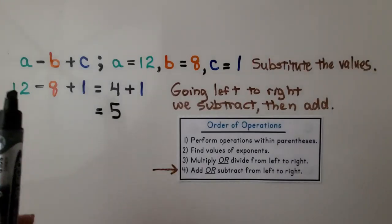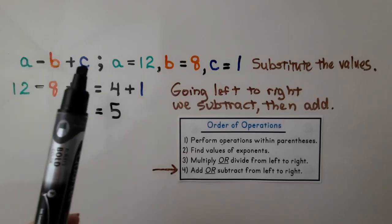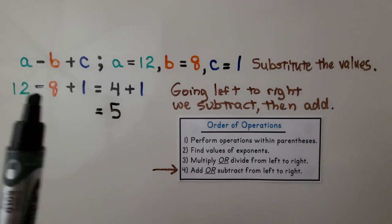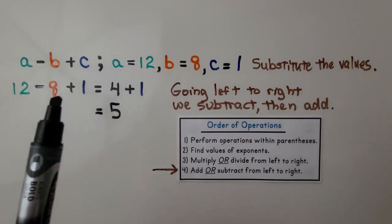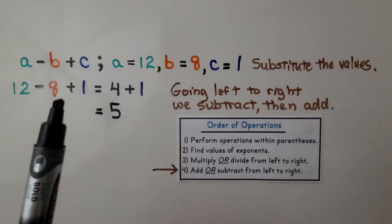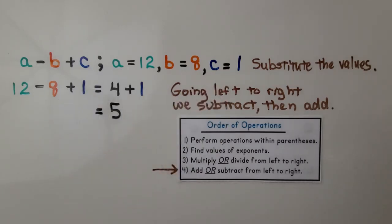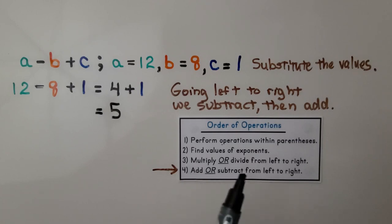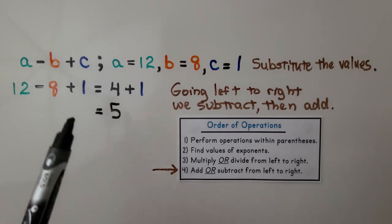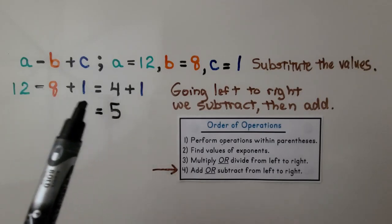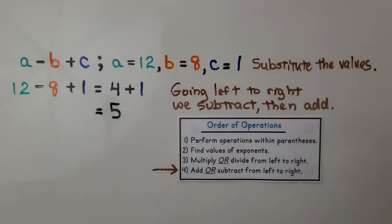Here we have three variables in our algebraic expression: a, b, and c. It tells us a equals 12, b equals 8, and c equals 1. Going left to right, because we have addition and subtraction, we subtract first: 12 minus 8 is 4. Then we add 1, which gives us 5.